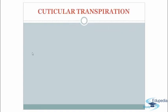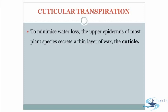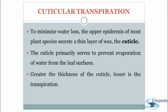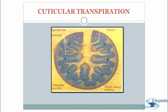Next is cuticular transpiration. To minimize water loss, the upper epidermis of most plant species secretes a thin layer of wax called the cuticle. The cuticle primarily serves to prevent evaporation of water from leaf surfaces. The greater the thickness of the cuticle, the less the transpiration. In the image of a leaf cross-section, you can see the epidermis with hairs, the stomata, the vascular bundle, and the thick waxy cuticle.